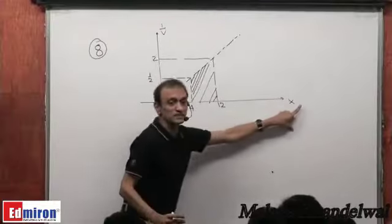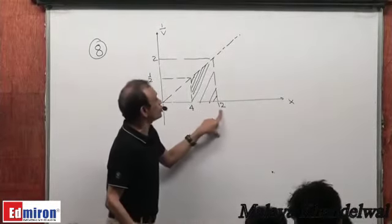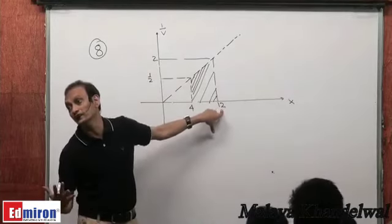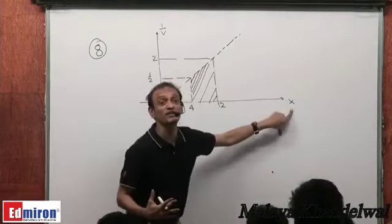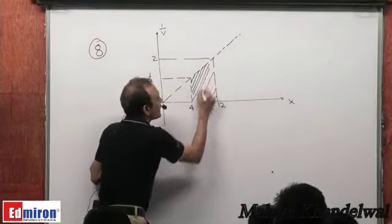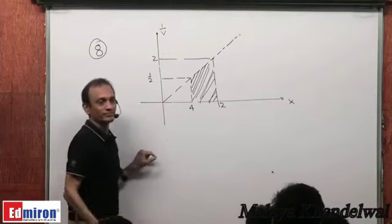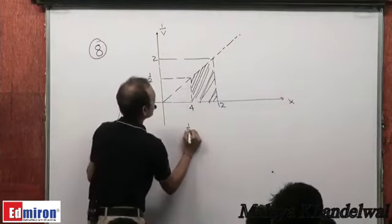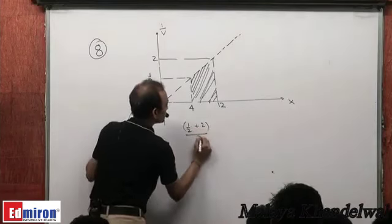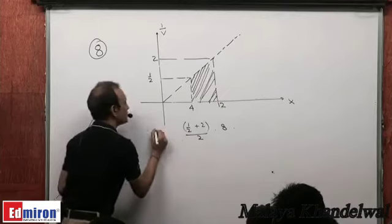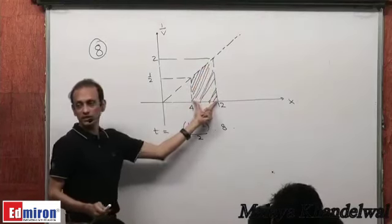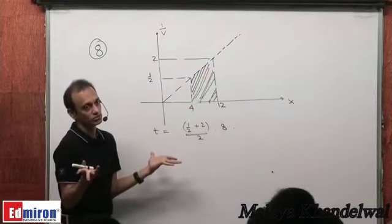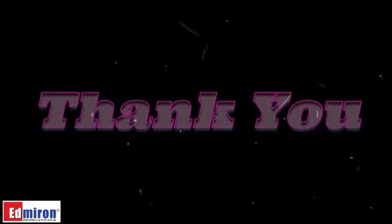A 1/V versus X graph is given. From X = 4 to X = 12 we want to find the time taken. The area under the 1/V versus X graph gives the time. The area of this trapezium is: average of parallel sides × distance between them = (½ + 2)/2 × 8 = (5/4) × 8 = 10 units.